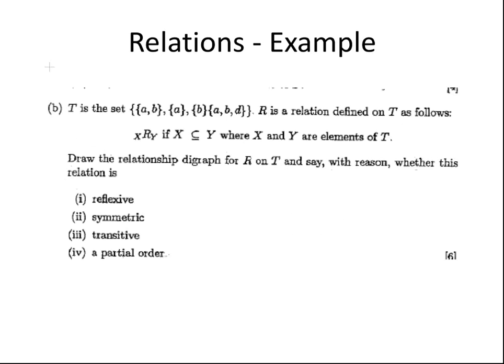T is the set that comprises the following four elements: the set {a,b}, the set {a}, the set {b}, and the set {a,b,d}. R is a relation defined on T as follows: x is related to y if x is a subset of y, where x and y are elements of T. Draw the relationship digraph for R on T and say with reason whether or not this relation is reflexive, symmetric, transitive, or a partial order.